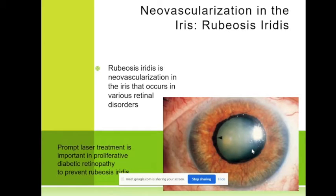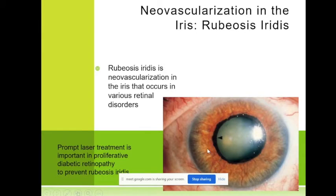In some diseases and disorders there is rubeosis iridis. Normally there are many blood vessels in the iris but we don't see them. When we see blood vessels like these shown here, they are new blood vessels — there is new vascularization of the iris.